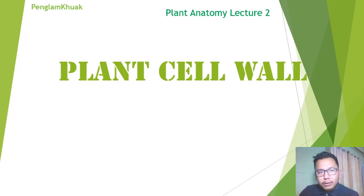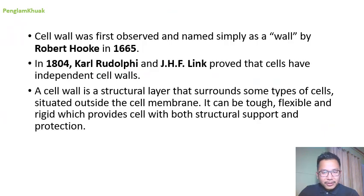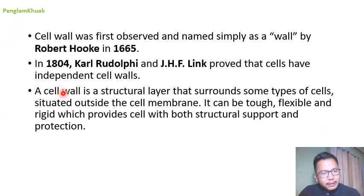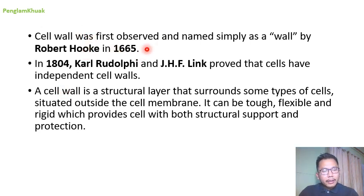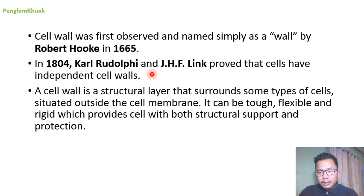In the year 1665, a scientist named Robert Hooke was the first to observe cell wall with the help of a simple microscope. And in the year 1804, Karl Rudolfi and Z.H.F. Ling proved that cells have independent cell wall, meaning they are autonomous.